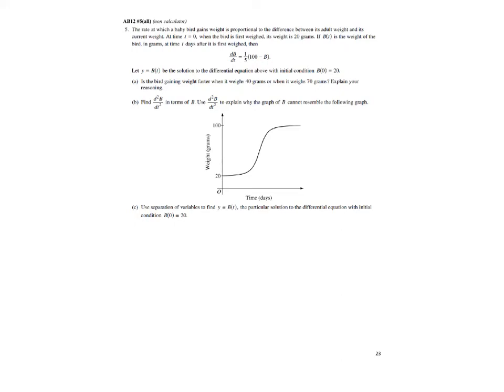Hey there, let's look at 2012 number five, non-calculator example, the baby bird problem. The rate at which a baby bird gains weight is proportional to the difference between its adult weight and its current weight. At time t equals zero, when the bird is first weighed, it weighs 20 grams.